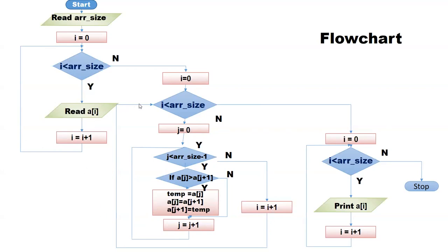i equal to i plus 1. Again check whether i is less than array size. If yes, start from the beginning of the array: j equal to 0. This outer loop continues. Once it becomes false, the entire array is sorted. Now we can print the array: i equal to 0, i less than array size, i plus plus — print a[i]. Once it becomes false, we have printed all the array and go to stop.